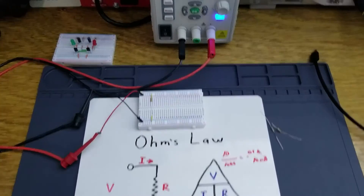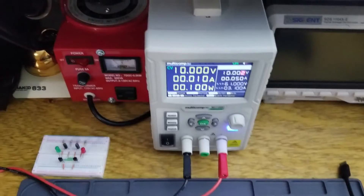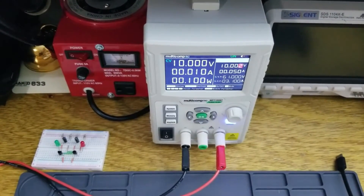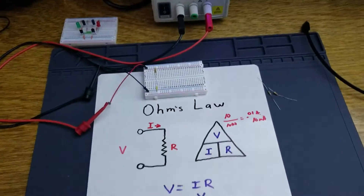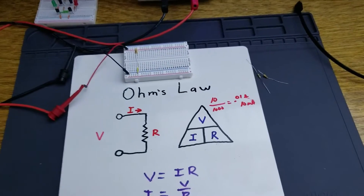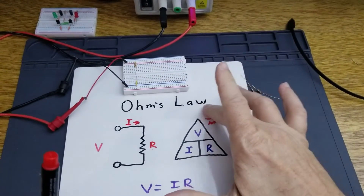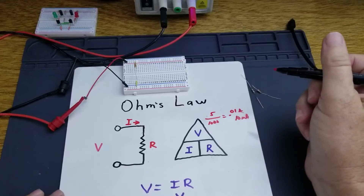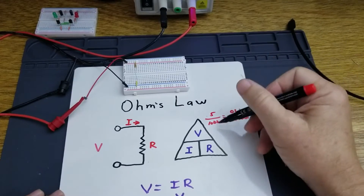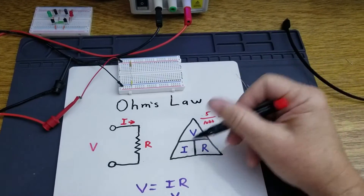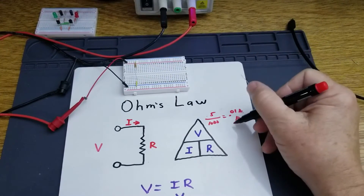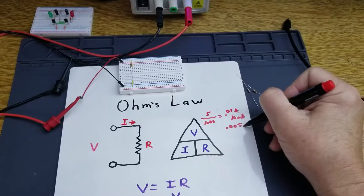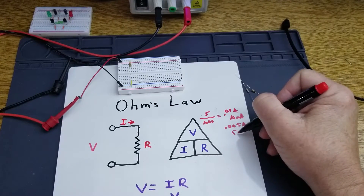What would happen if you were to reduce that voltage to 5 volts? If you reduce the voltage to 5 volts through the calculations, once you cut your current in half, that should give you 0.005 amps or 5 milliamps.